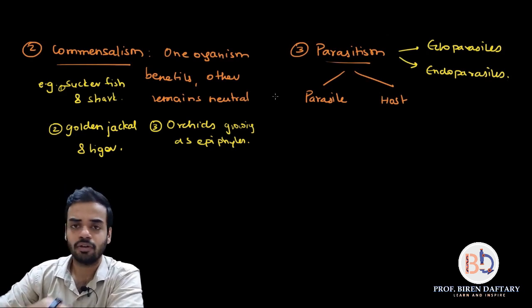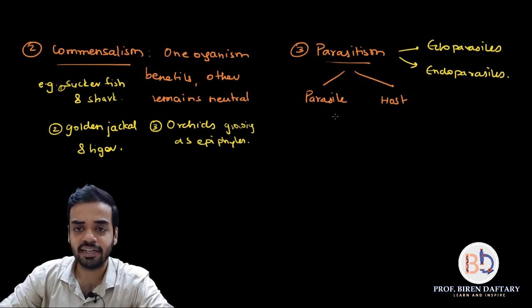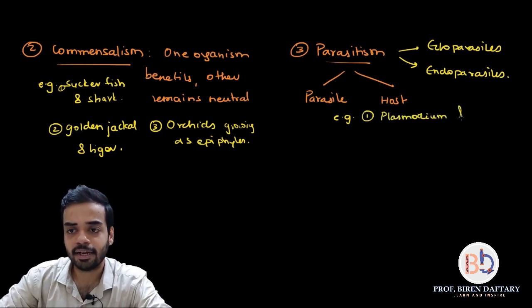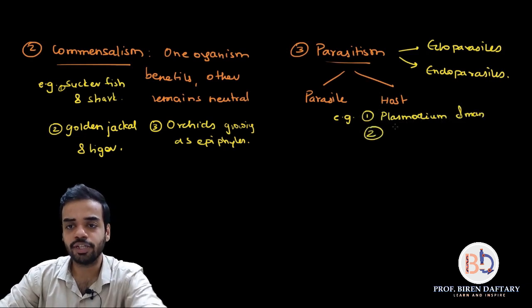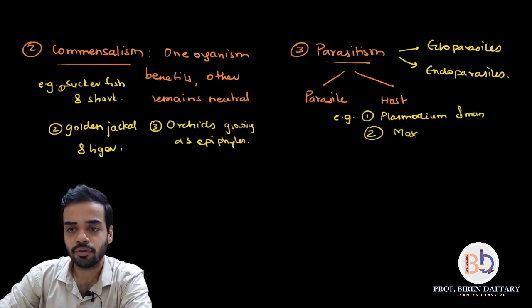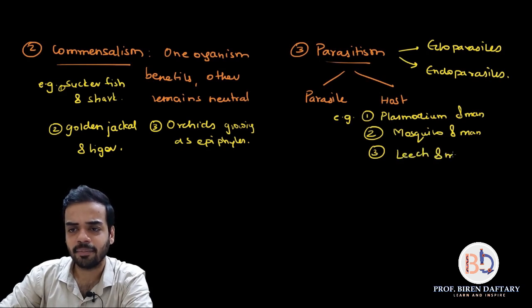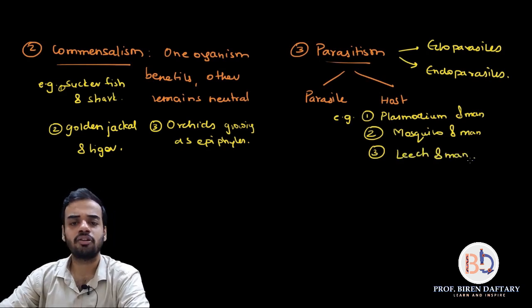So in parasitism, one organism is benefited — it is called the parasite — and the other is harmed — it is called the host. The examples of parasitism are: Plasmodium and man, mosquito and man, and leech and man.